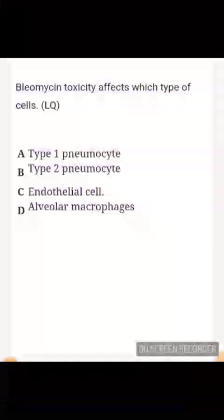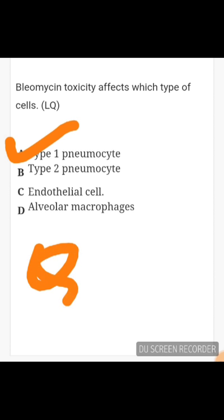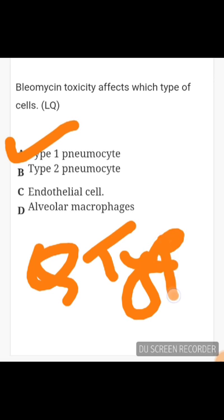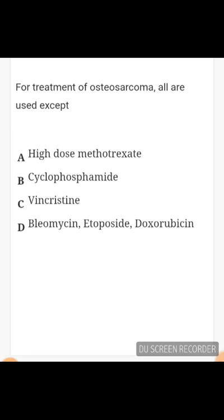Bleomycin toxicity affects which type of cell? People often get confused between type 1 and type 2 pneumocytes. Bleomycin causes destruction of type 1 pneumocytes - remember: type 1 comes first, so it is destroyed first. This destruction of type 1 pneumocytes causes compensatory hyperplasia of type 2 pneumocytes, meaning type 2 increases in number.